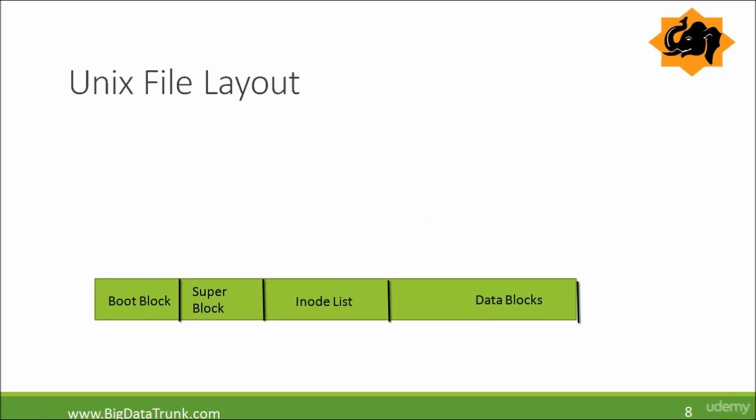Now, the Unix file layout is divided into four parts: boot block, super block, inode list, and data blocks. The boot block is located at the beginning of the file system and contains code needed to initialize the operating system. The super block describes the state of the file system — how large it is and how many files it can store. The inode list is a table used to track and maintain information about each file created on the file system. The data blocks are where the actual data of the files is stored; they follow the inode table and occupy most of the storage device space.